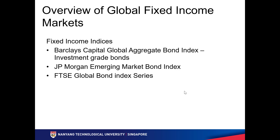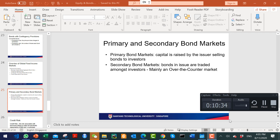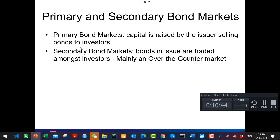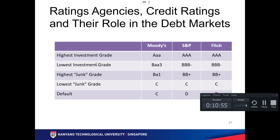Fixed income indices include Barclays, JP Morgan, FTSE, etc. In the bond market, primary bond issuances are not a lot — the majority is secondary market trading. The secondary bond market is not very transparent, so the spread is always harder to determine. Credit risk is very important — you need to know whether there is any default risk. AAA is the best rating, at the Singapore sovereign level; corporate bonds are usually rated BBB and below.